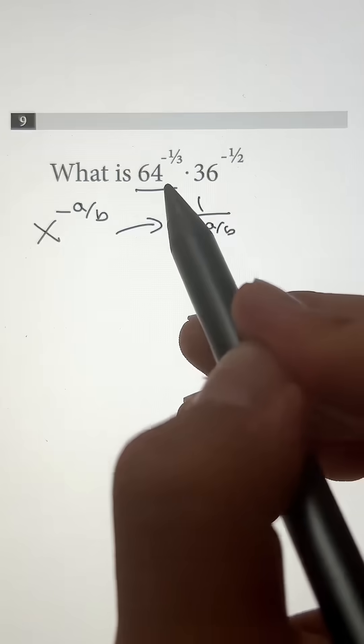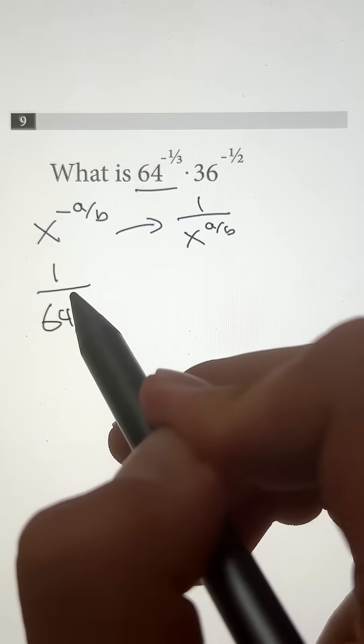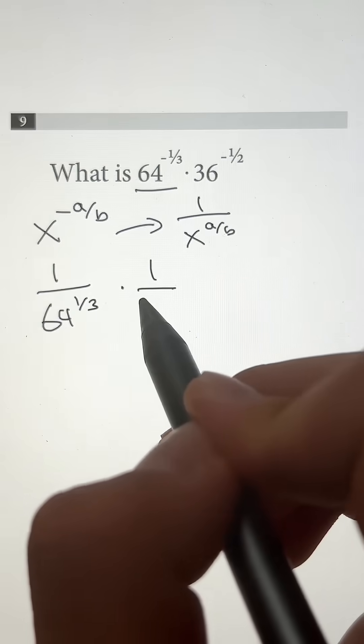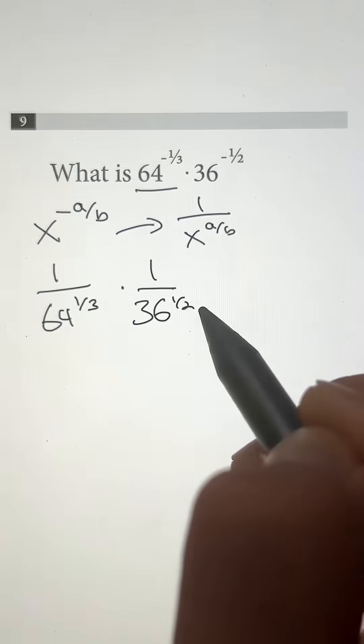So 64 to the negative one-third just turns into 1 divided by 64 to the one-third power. And 36 to the negative one-half power is just going to be 1 divided by 36 to the one-half power.